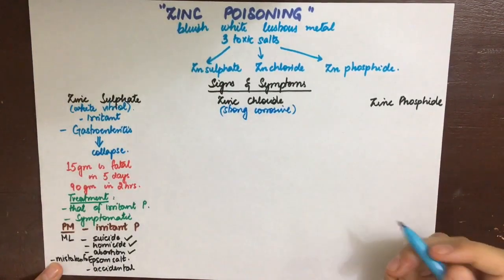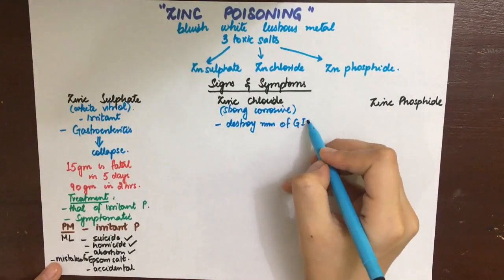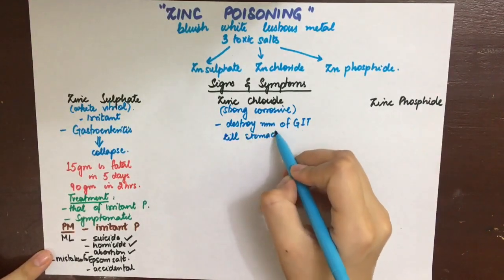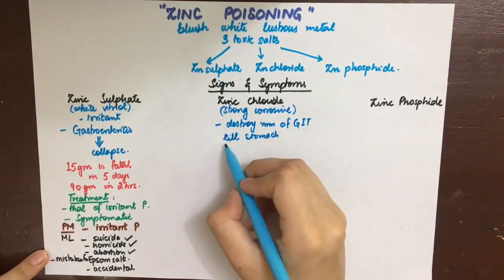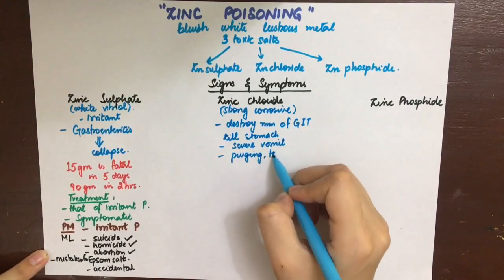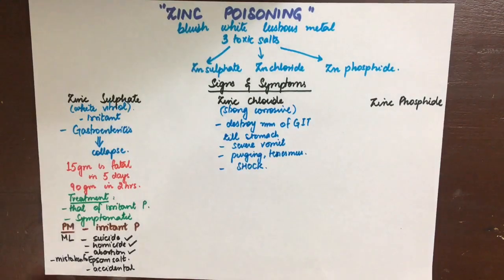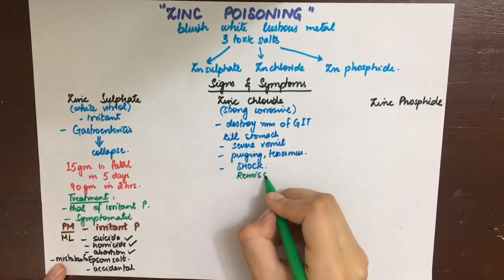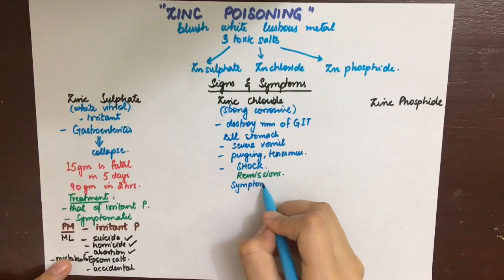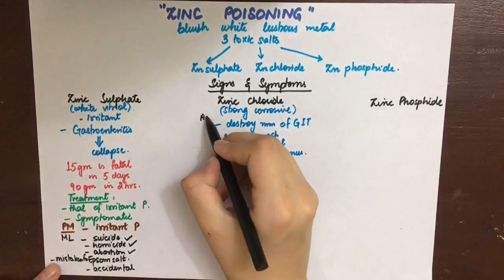The next zinc salt is zinc chloride. It has a strong corrosive action and will destroy the mucous membrane of the mouth, throat, esophagus, and stomach. There is severe vomiting, purging with tenesmus and blood, and shock will occur. There are remissions in which the patient will feel okay, and then recurrences can occur. Chronic poisoning of zinc chloride is the same as that of lead and copper.